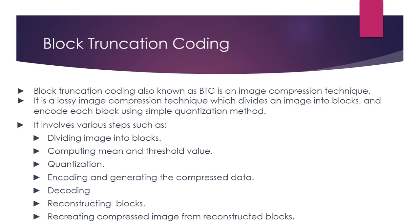Pixels below the threshold value are assigned the threshold value, and pixels above it are assigned a minimum or maximum value based on a binary decision. We then store the mean value, threshold value, and the bit plane of the block in the compressed data. To decode the encoded data and reconstruct the compressed image, we retrieve the mean and threshold values for each block, use these to reconstruct pixel values, and then combine all reconstructed blocks to recreate the image. We implemented all these processes and wrote a MATLAB code which performs this task.